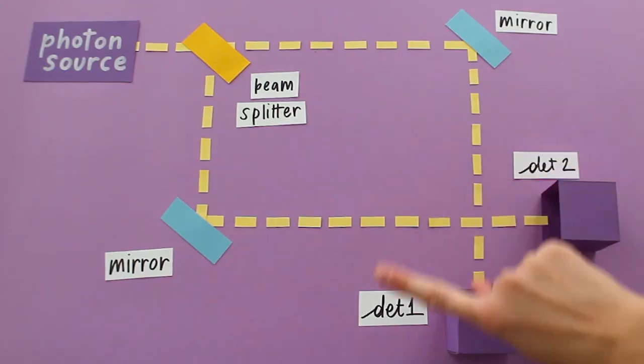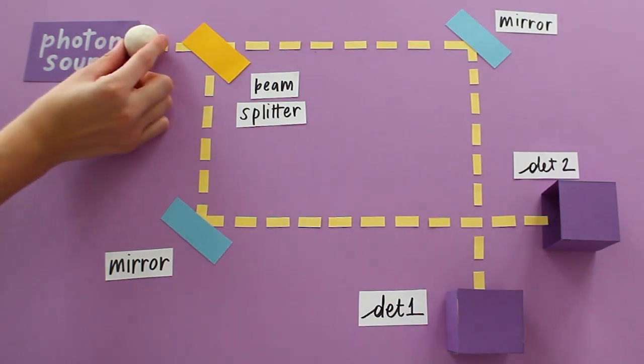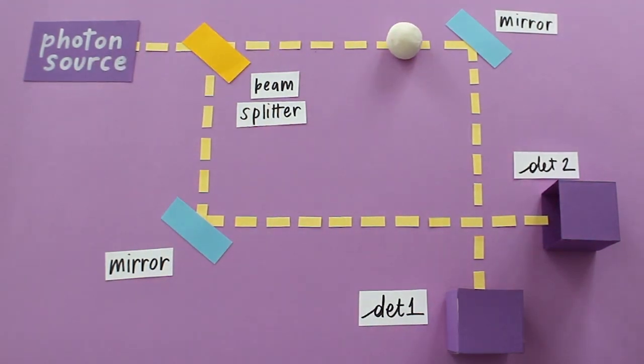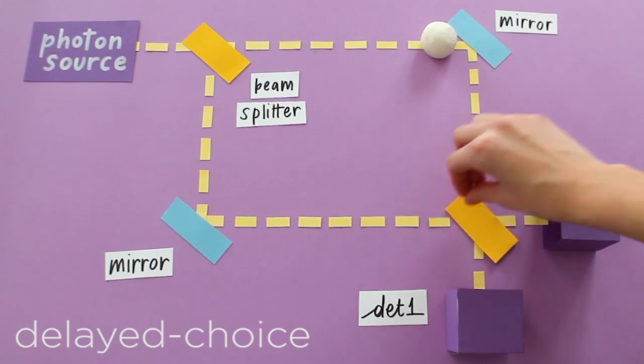The same time paradox also emerges if the beam splitter is out at the beginning, and the observer decides to insert it while the photon is inside the interferometer.